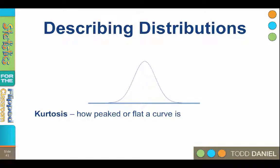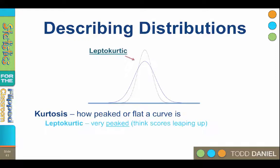When the scores are very close together, then the curve becomes peaked. We call this a leptokurtic curve. Think of the scores leaping up, leptokurtic.